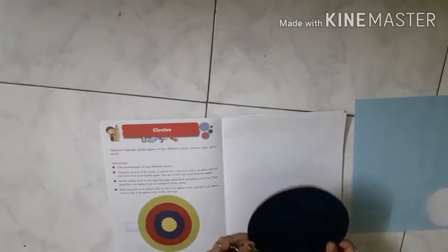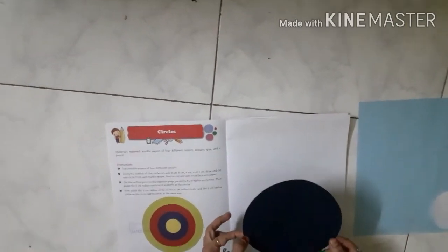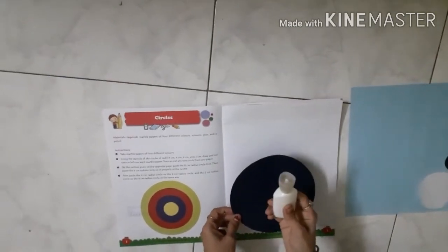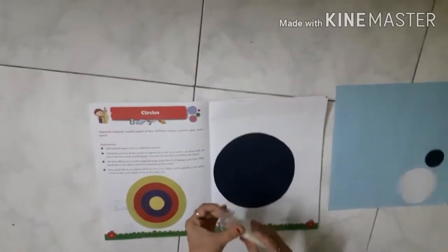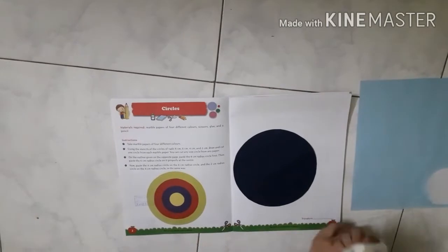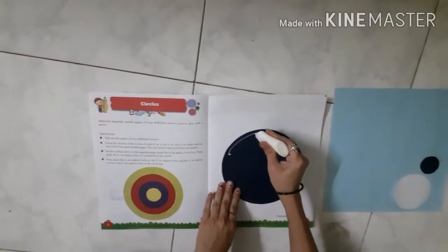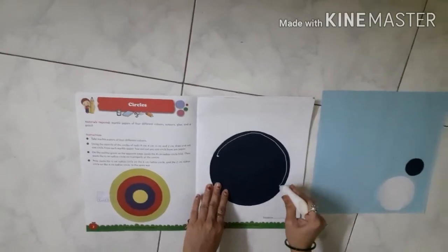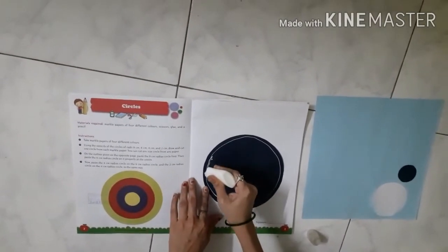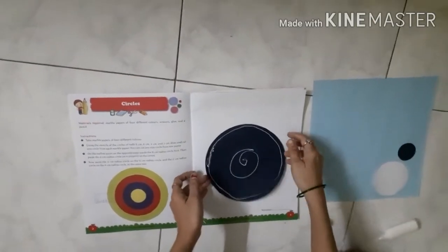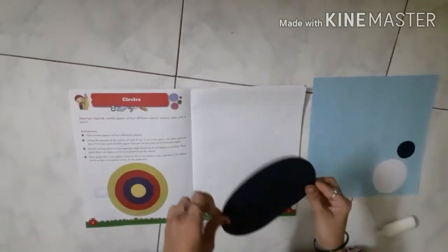Take the eight centimeter circle. You can use Fevicol or any glue. Apply the glue on the circle like this and stick it on the page. Press it properly to make sure it sticks well.